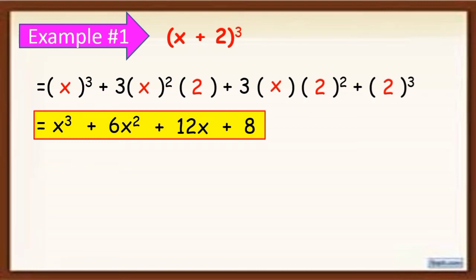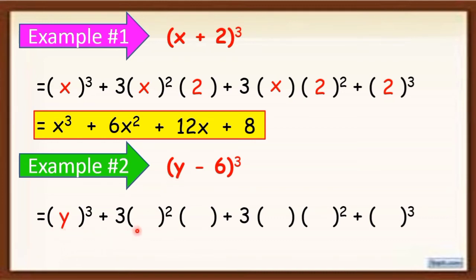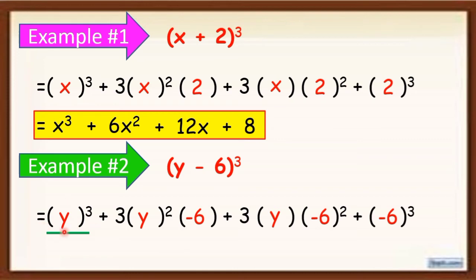Let's have another example: (y − 6) quantity cubed. Again, this will be our pattern. Cube the first term, plus 3 times the square of the first term times the second term, plus 3 times the first term times the square of the second term, plus the cube of the last term. Now, simplify: y cubed, plus 3 times 1 times negative 6 equals negative 18, and y squared.